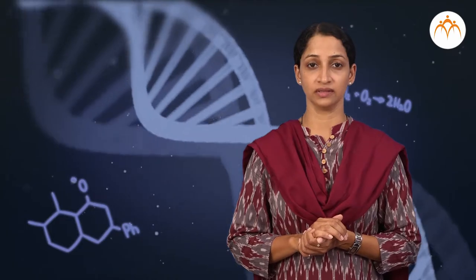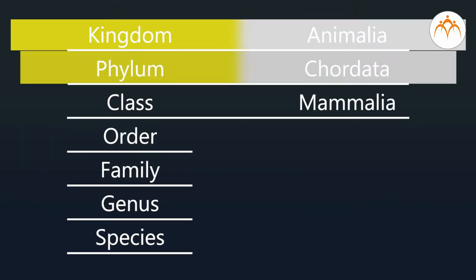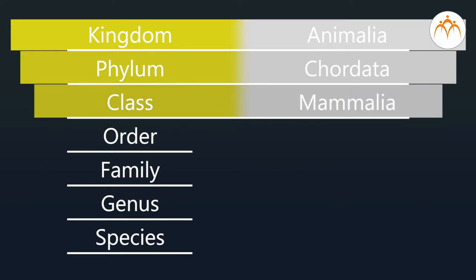From the level of kingdom till class Mammalia, man, bat, and kangaroo show many characteristics in common. Hence they are placed in kingdom Animalia, phylum Chordata, and class Mammalia. But after this, they have to be placed in different orders due to differences in their characters.